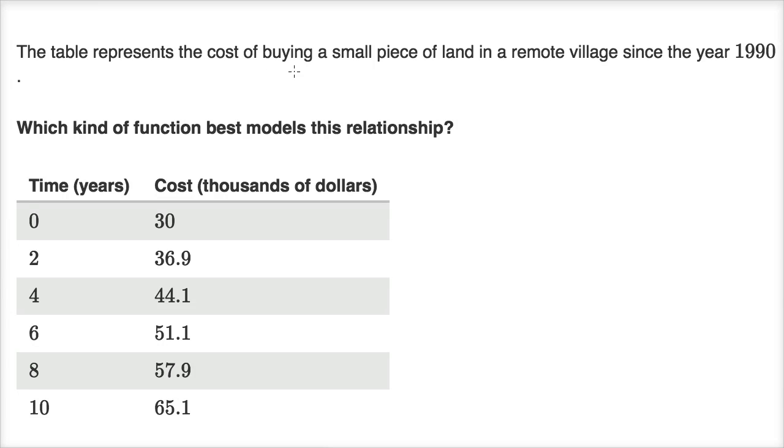The table represents the cost of buying a small piece of land in a remote village since the year 1990. Which kind of function best models this relationship?